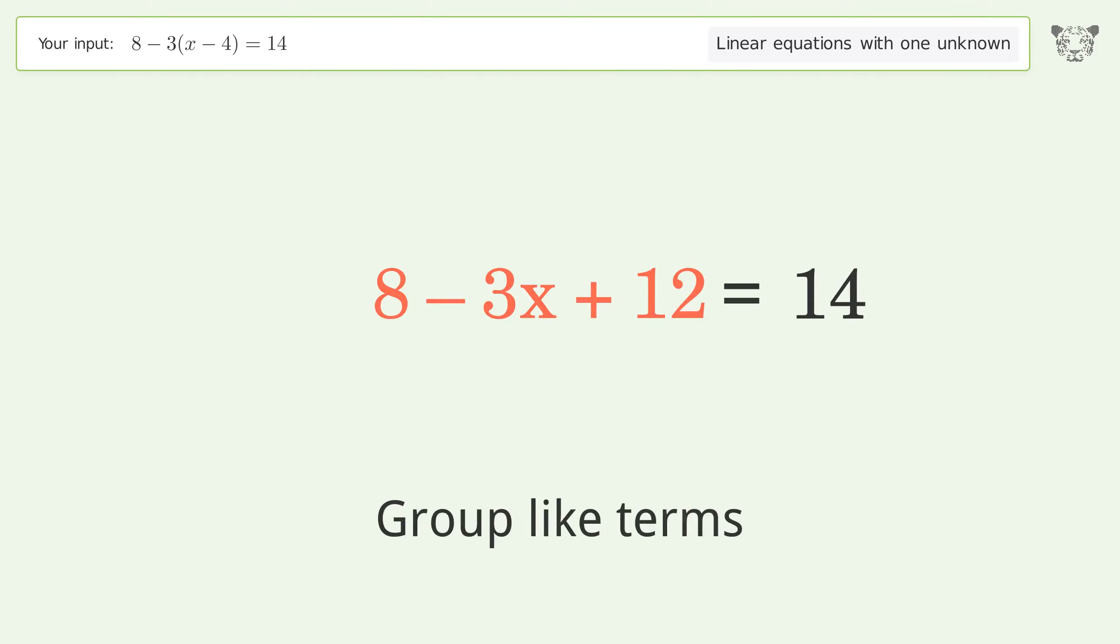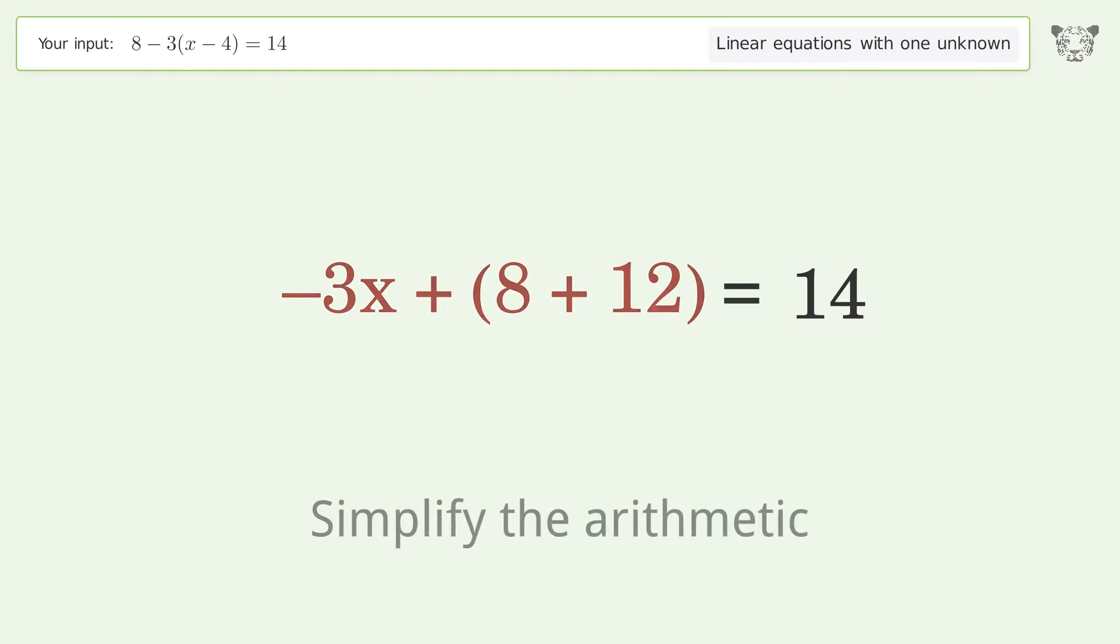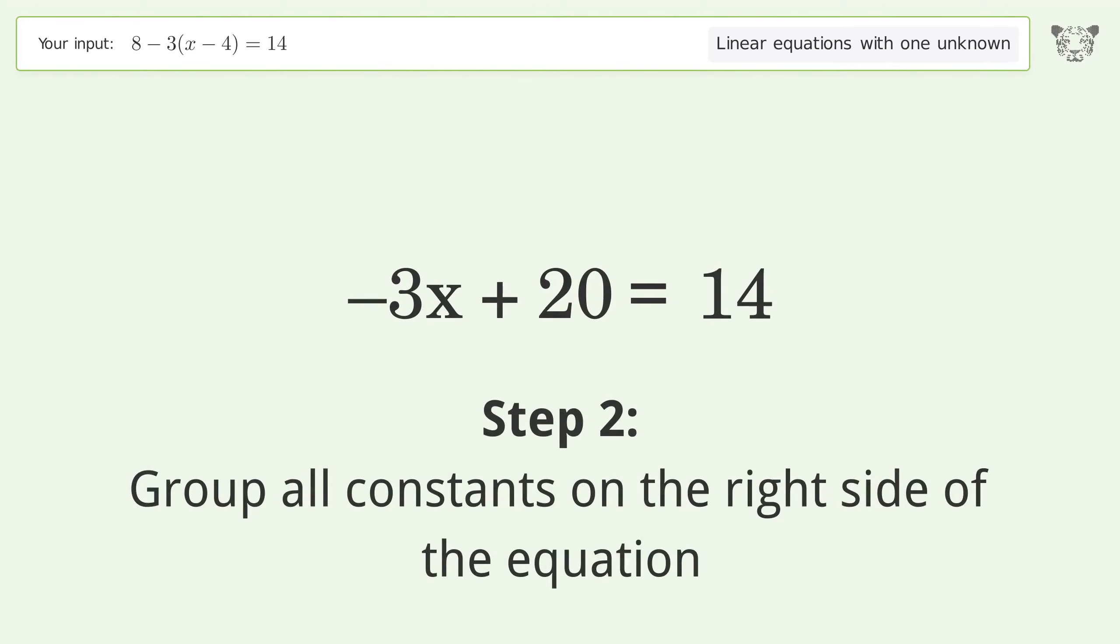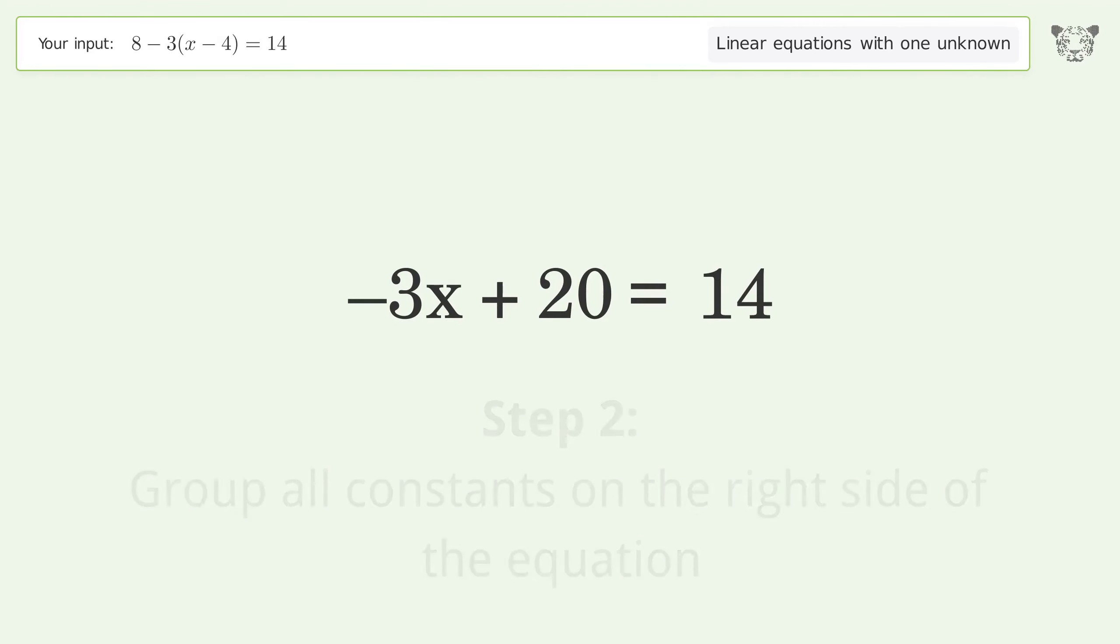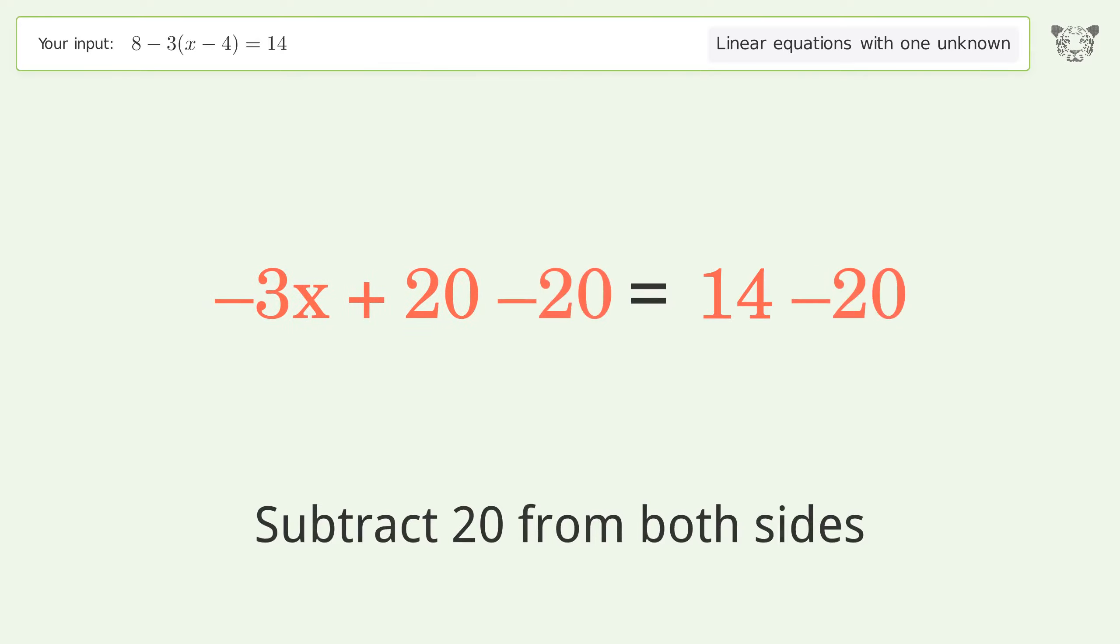Group like terms, simplify the arithmetic. Group all constants on the right side of the equation. Subtract 20 from both sides. Simplify the arithmetic.